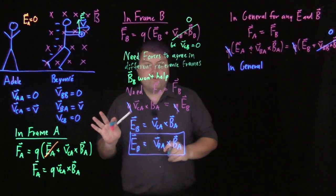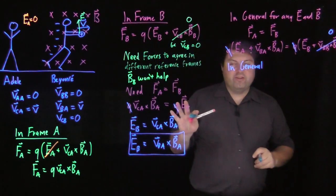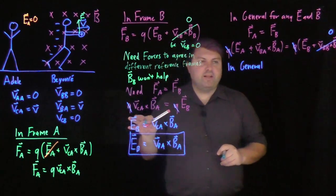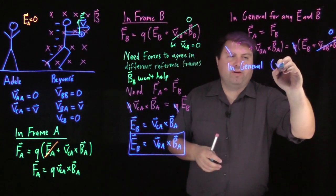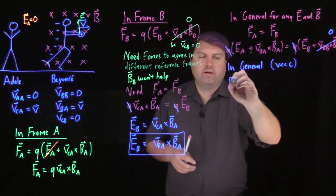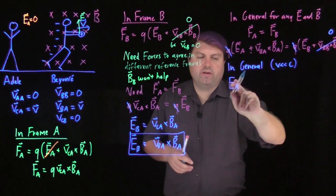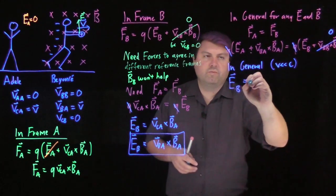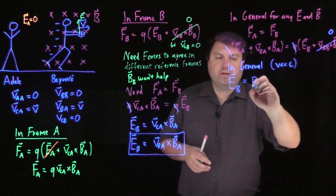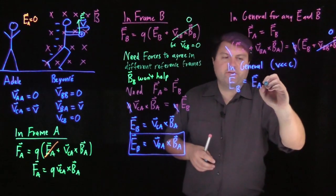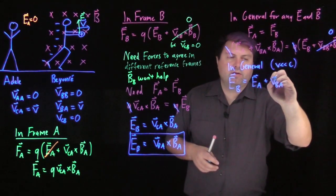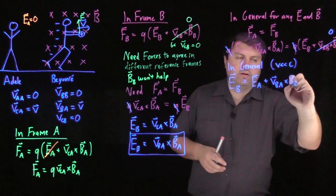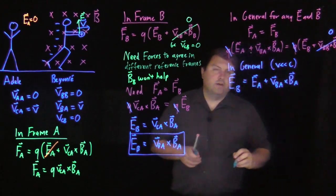And I will note this is not including special relativity, general relativity, anything like that. So this is when V is much, much less than C. Then our electric field in reference frame B is going to be equal to the electric field in reference frame A plus this.